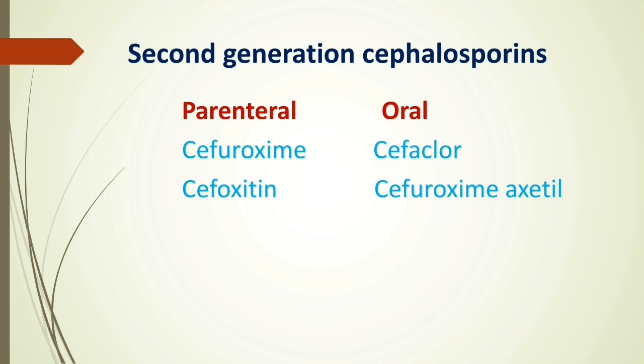One important point: cefuroxime is a parenteral second generation cephalosporin, whereas cefuroxime axetil is an oral second generation cephalosporin. This is an important distinction that can be asked in exam questions — whether cefuroxime axetil is oral or parenteral. Note this point.